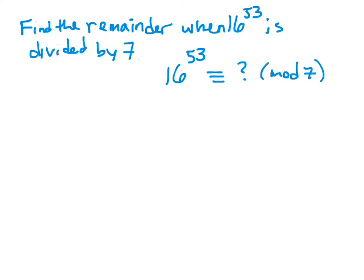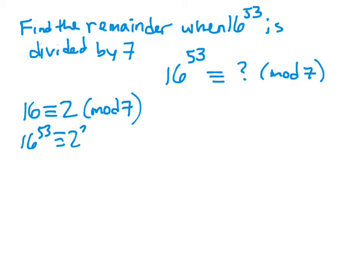All we really need to do is reduce 16 to the 53rd using congruence rules until we get to the least residue. The first thing we want to do is reduce the base number 16 and make it as small as possible. Off to the side, we want to see what 16 is congruent to mod 7 — we want a number smaller than 7. It turns out 16 is congruent to 2 mod 7. By the theorem we just proved, 16 to the 53rd is congruent to 2 to the 53rd mod 7.